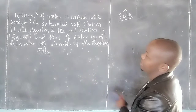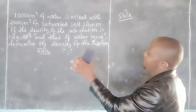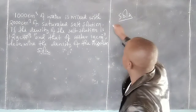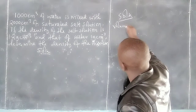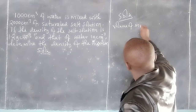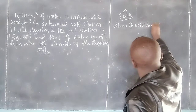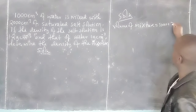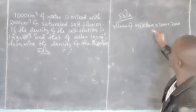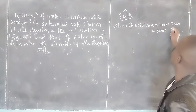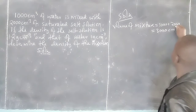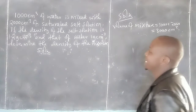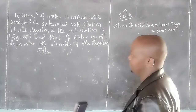The volume of water is 1000 cm³ and that of the salt solution is 2000 cm³. Therefore, the volume of the mixture will be the volume of water plus the volume of the salt solution, giving us 3000 cubic centimeters as the total volume.